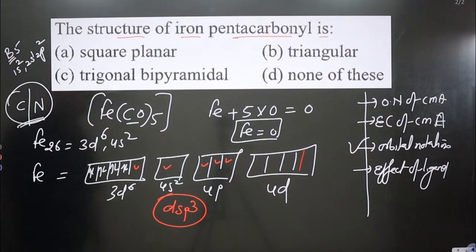With dsp3 hybridization and five ligands, the structure we are supposed to get is trigonal bipyramidal. Option C is correct: trigonal bipyramidal.